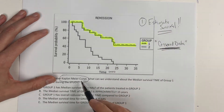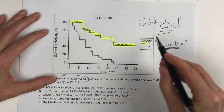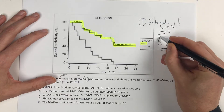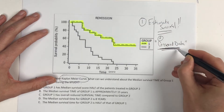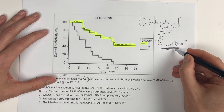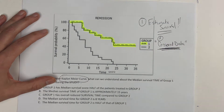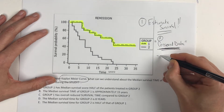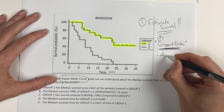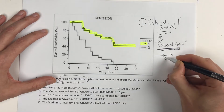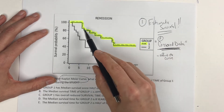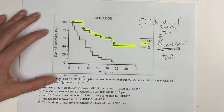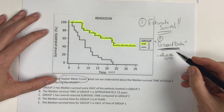So number one: stair-step graph means Kaplan-Meier curve, and it estimates survival. It's going to have censored data in there, and that censored data can affect the curve — maybe it won't be as steep. That affects the way the curve looks, and we'll get to that in just a second.